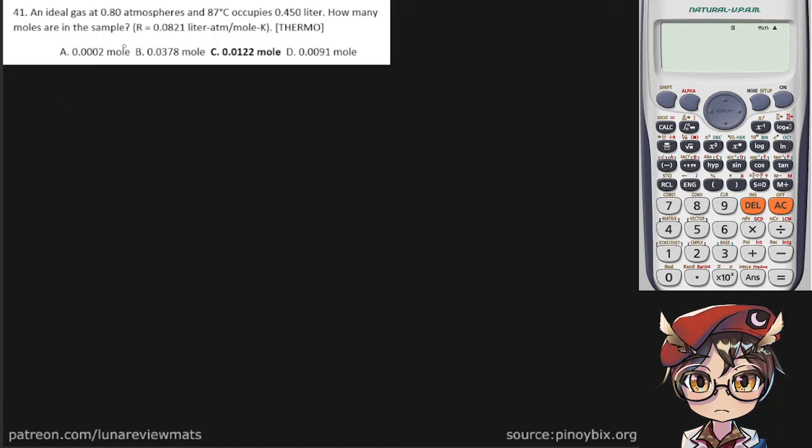An ideal gas at 0.80 atmospheres and 87 degrees Celsius occupies a volume of 0.45 liters. How many moles are in the sample?